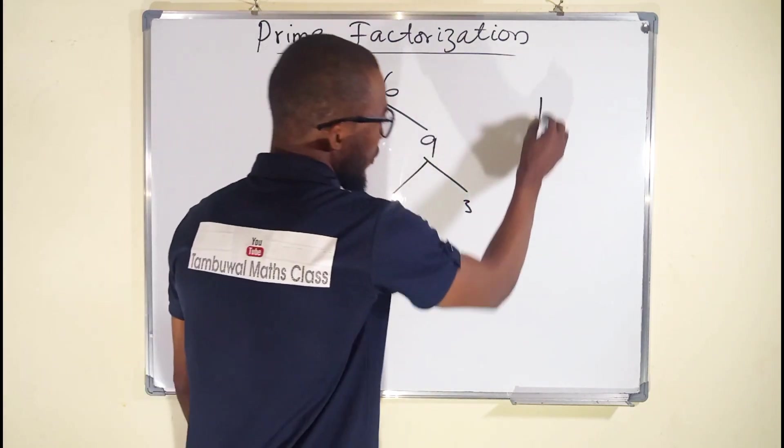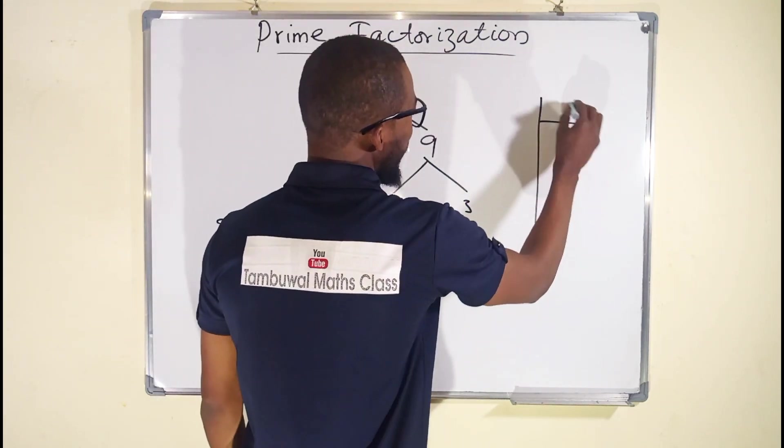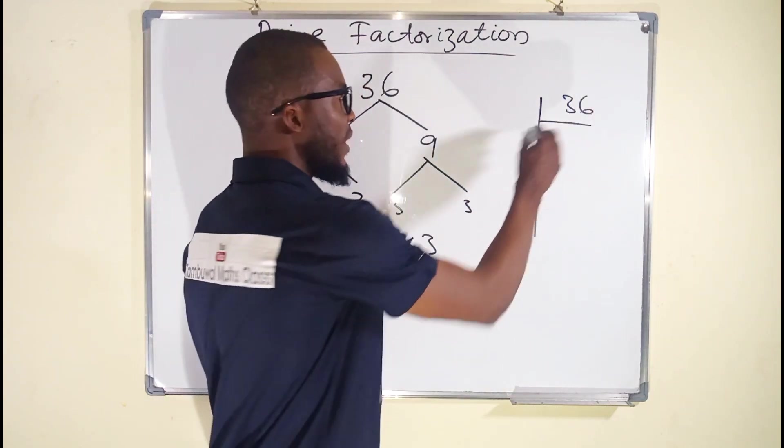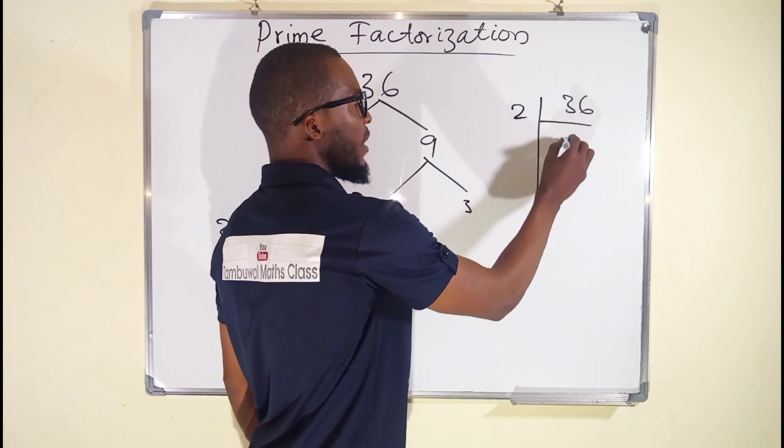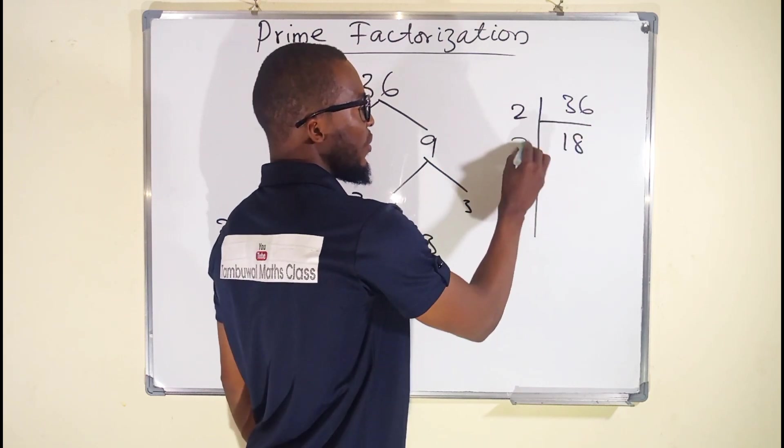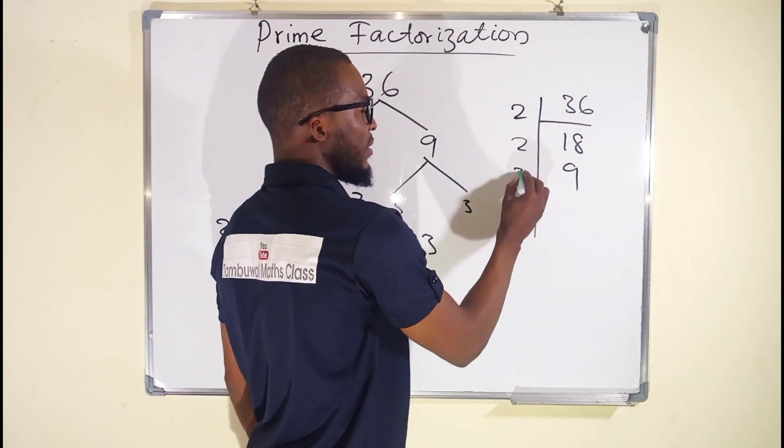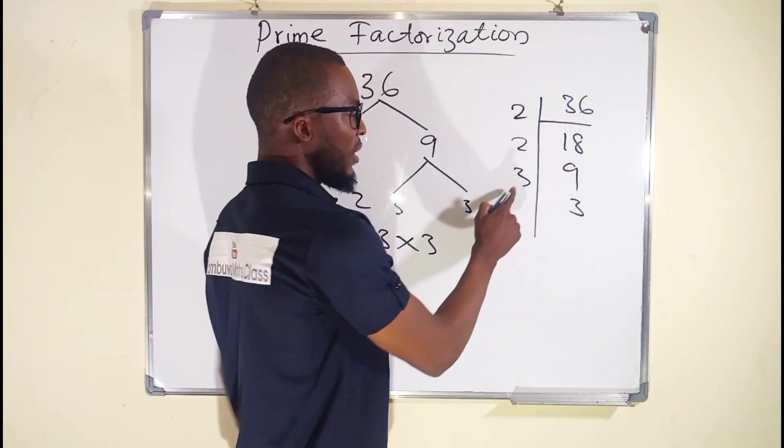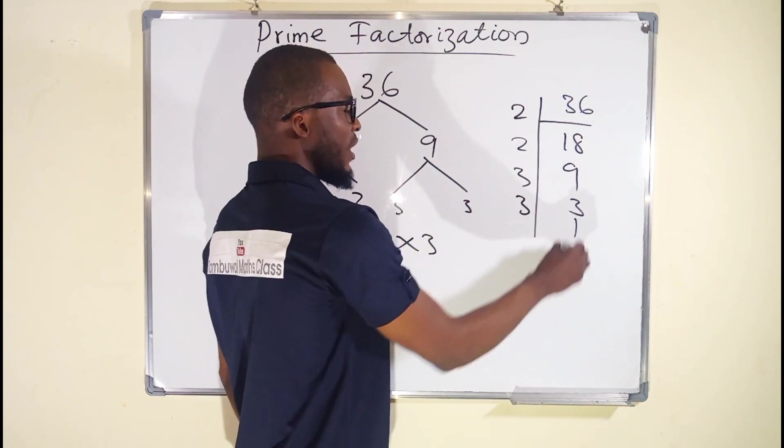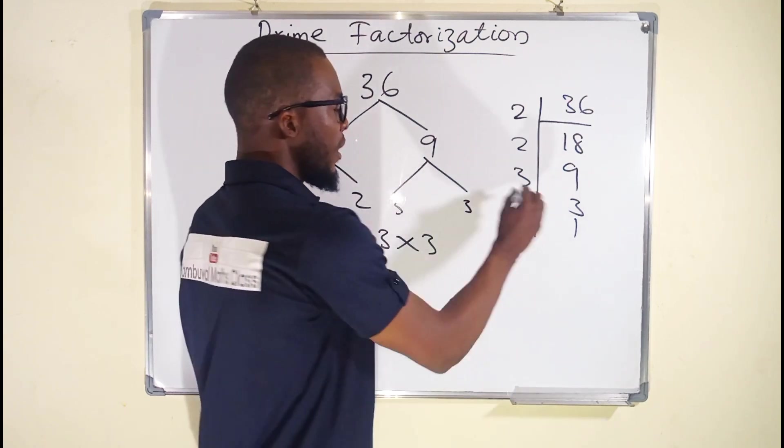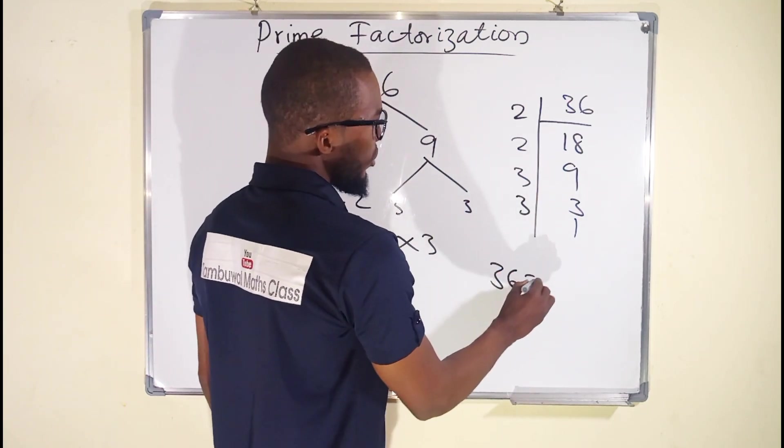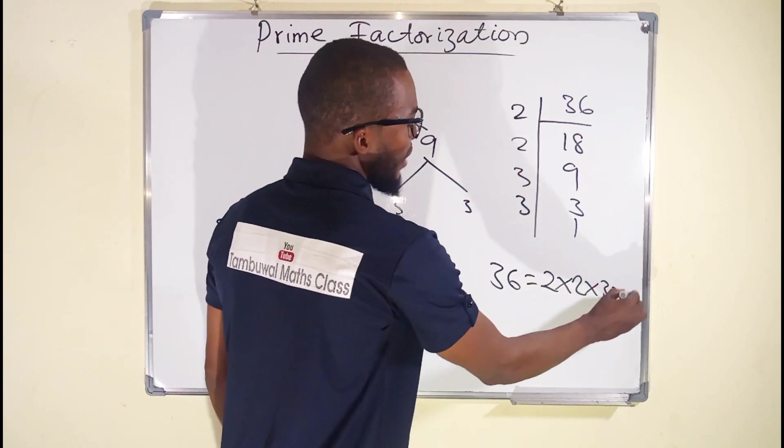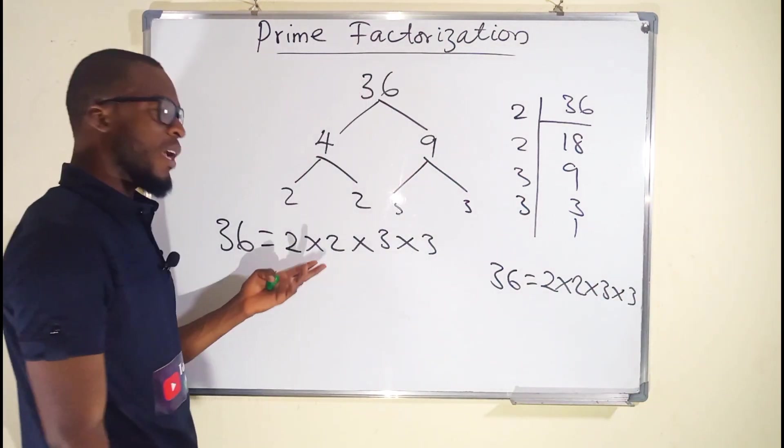And you can also perform a successive division of this number 36 using all the possible prime factors of 36. 2 can go here 18 times. 2 can go here 9 times. 3 can go here 3 because 2 can no longer go into 9. 3 can go into 3 one time. Once you reach 1 you stop. 36 will be equal to 2 times 2 times 3 times 3. The same as this.